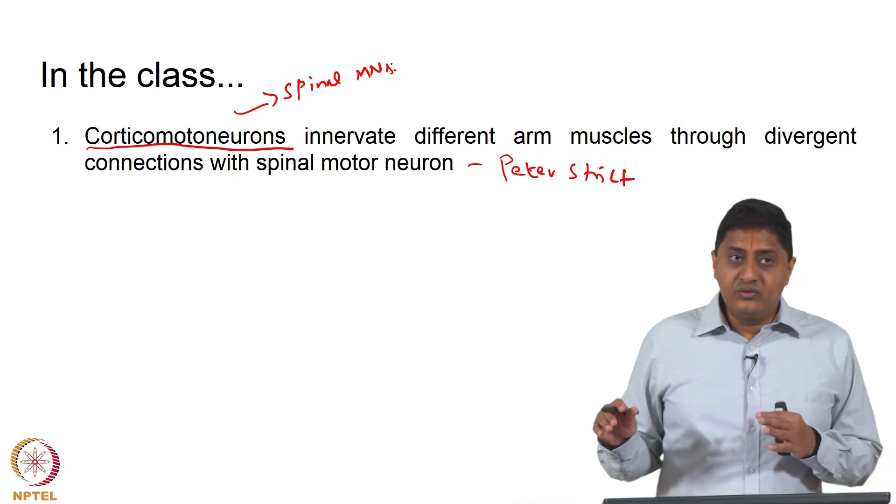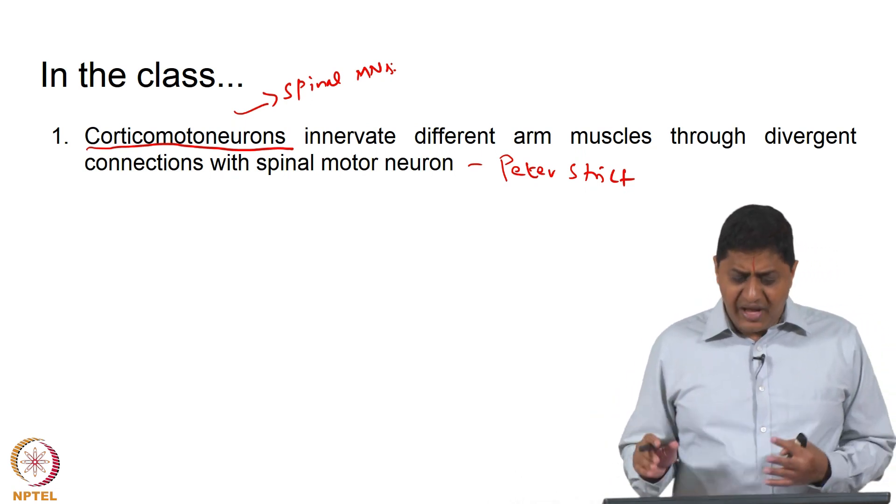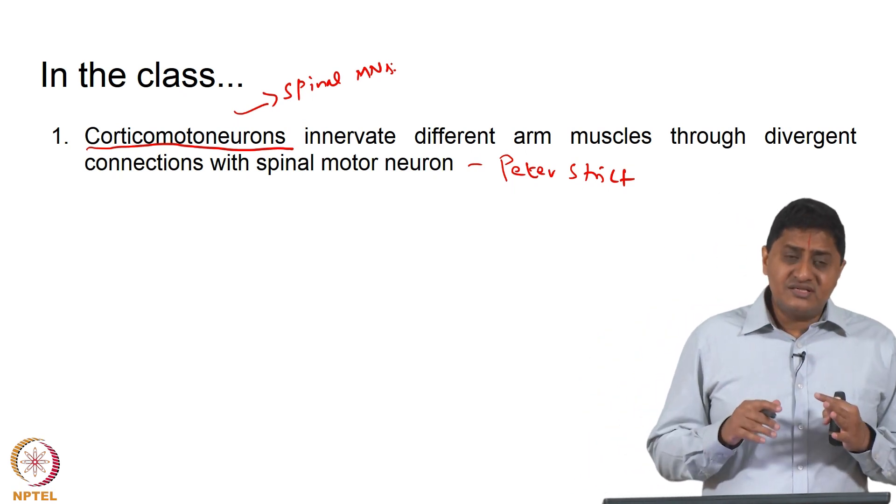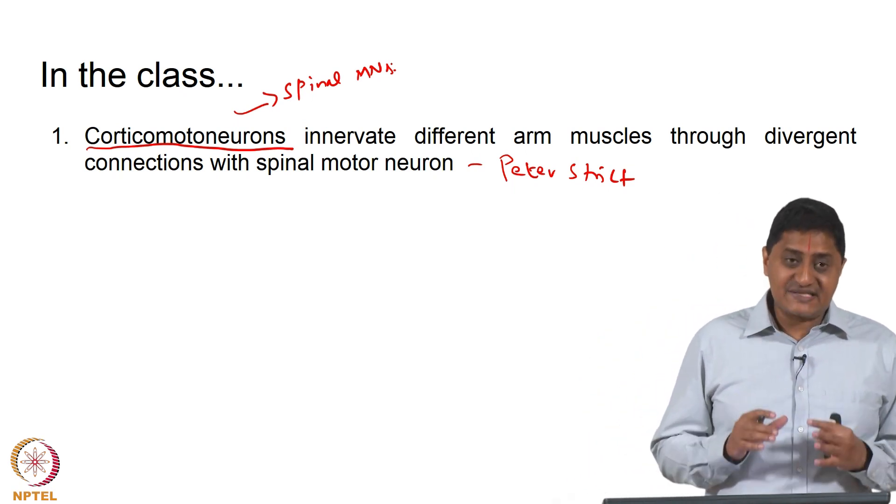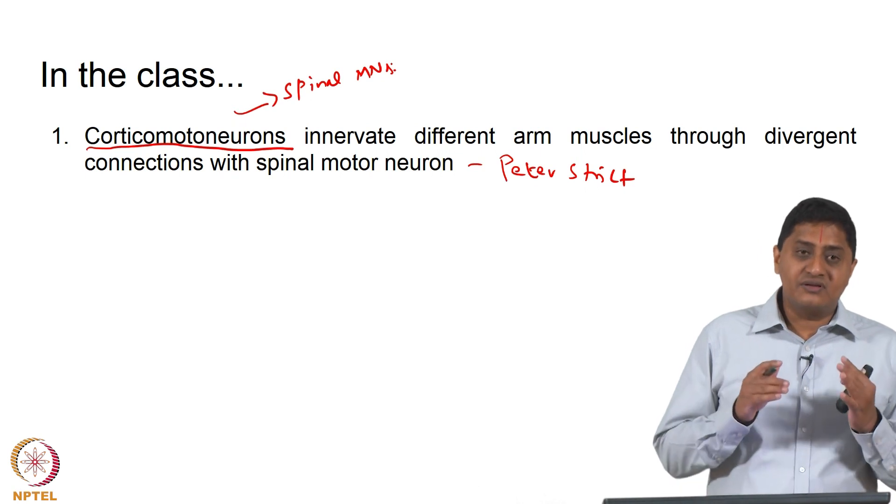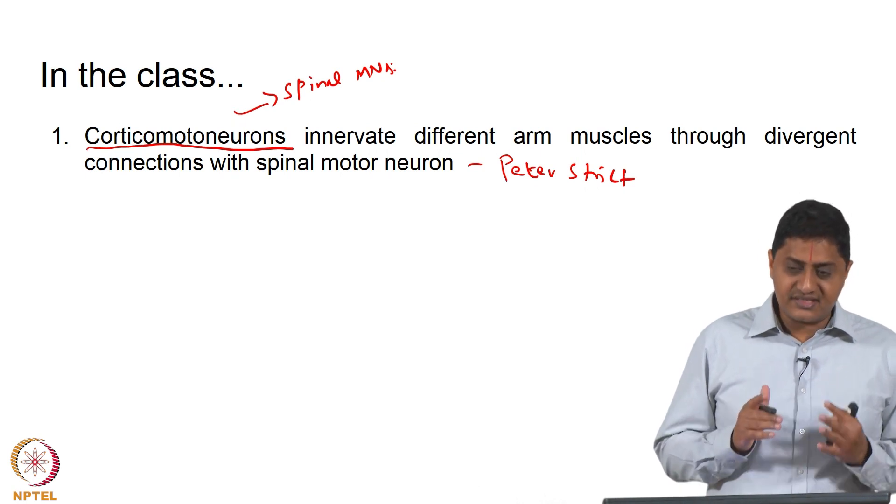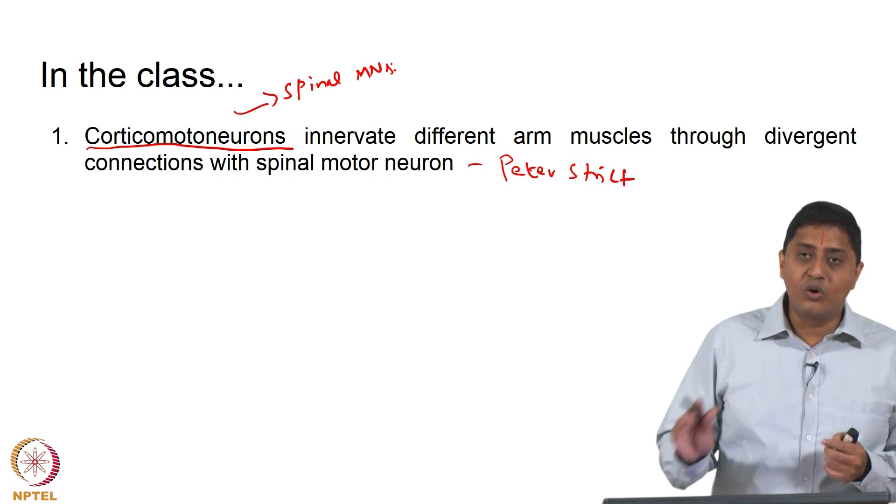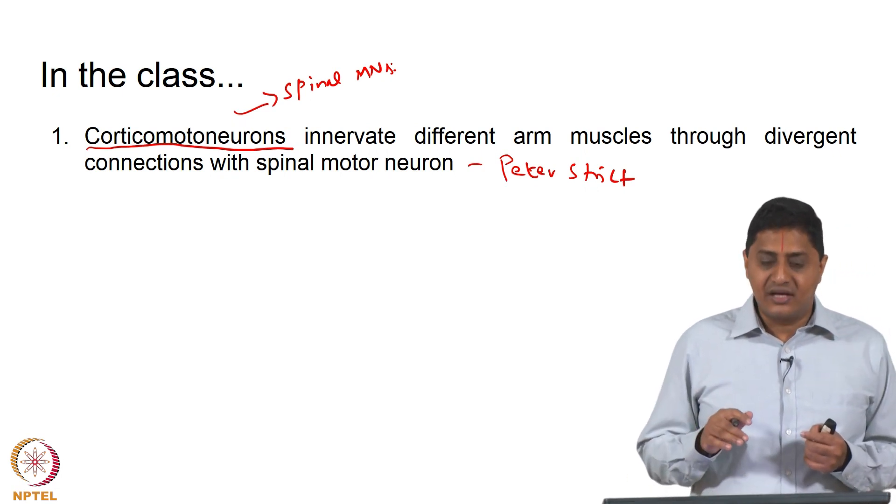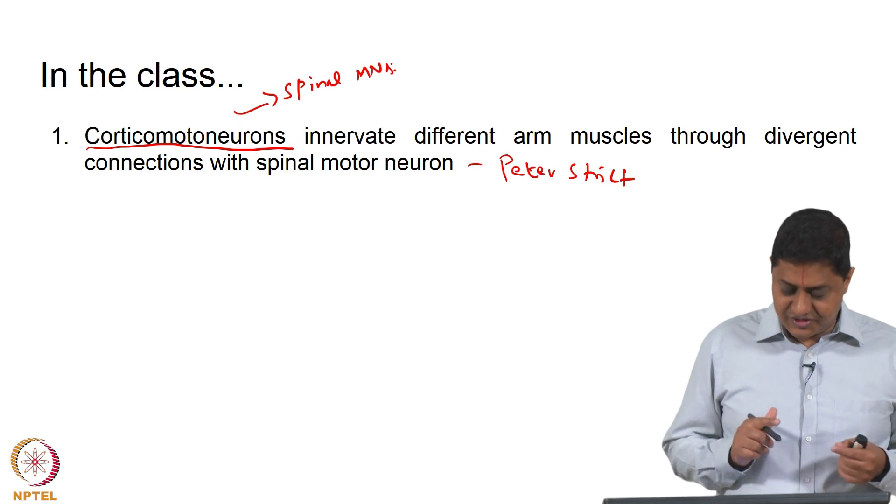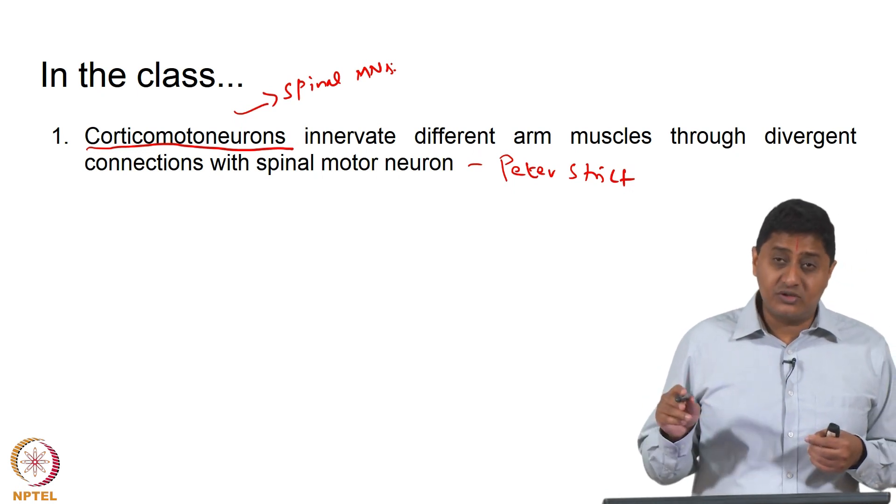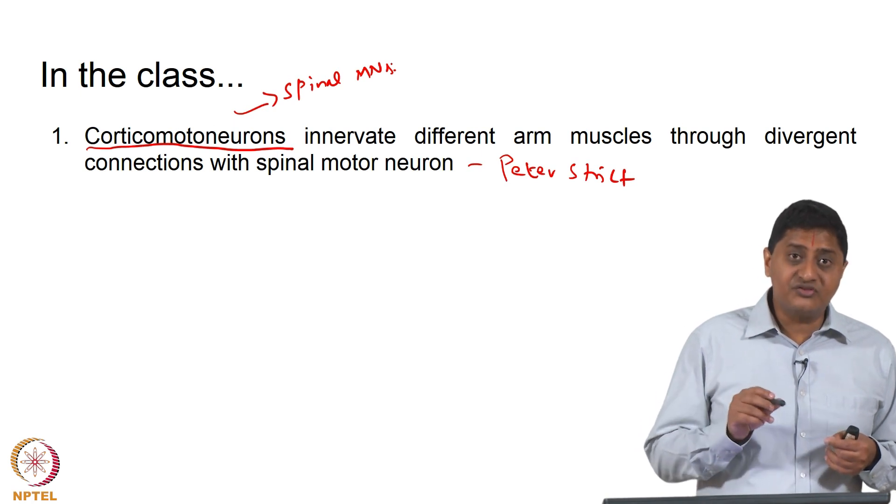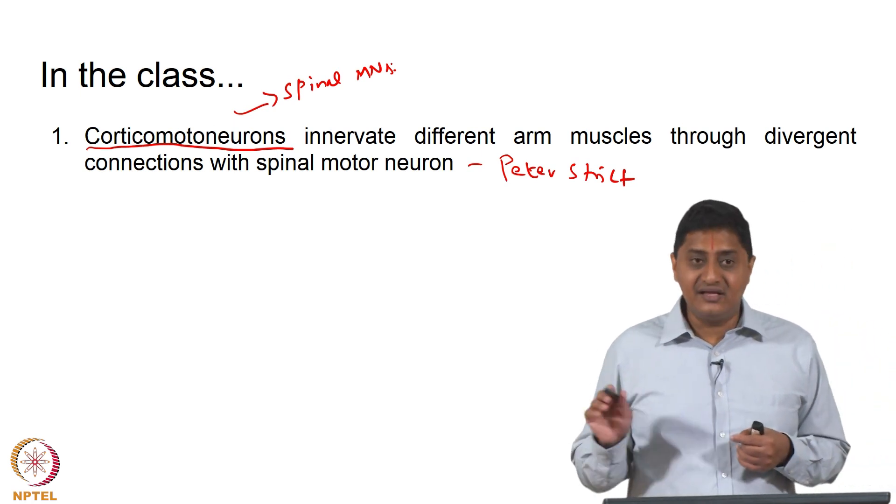If you look at the evolution of these from mammals to primates to humans, in mammals these are present in less quantity. There are very few corticomotor neurons in lower mammals such as rats and mice. That means spinal motor neurons receive inputs from the cortex through interneurons in the lower animals.